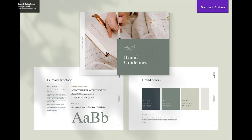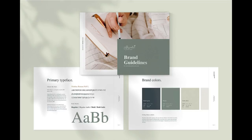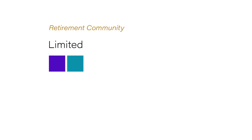For this retirement community example we talked about just last lesson, we came up with two primary colors based on color psychology and some other industry research. But those are very limited. When you try to put things together and those are the only two color choices you have, you're extremely limited.